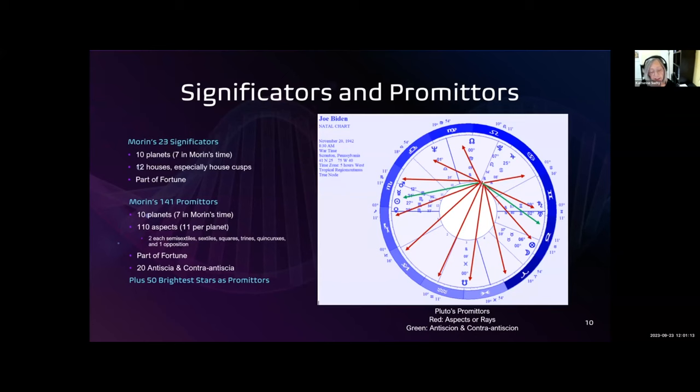When it began to reemerge in the 19th century, new methods of forecasting were developed. Some were symbolic, like solar arc directions, and some were different versions of primary directions. Placidus's secondary progressions also became more popular. When newly translated text uncovered classical primary directions in the late 20th century, some astrologers were skeptical about how they could possibly work.